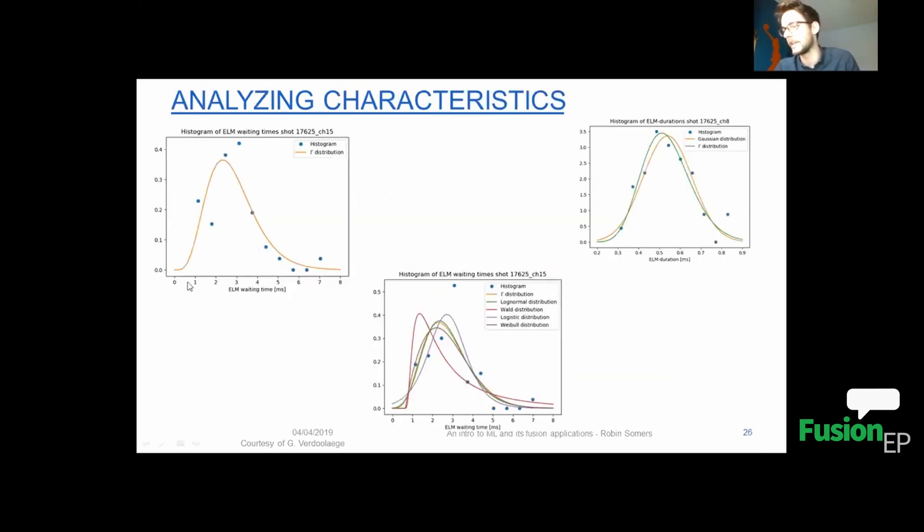And once this is done, we can analyze the characteristics. Once we analyze the characteristics, we have, for example, the shape parameter of this gamma. Then we can plot all the shape parameters in a 1D data or in a 1D parameter space.